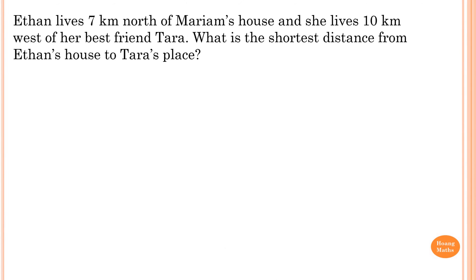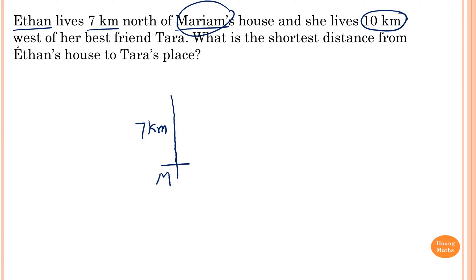Ethan lives 10 kilometers north of Maryam's house, and she lives 10 kilometers west of her best friend Tara. What is the shortest distance from Ethan's house to Tara's place? We draw a diagram: Maryam is the reference point, Ethan is 7 kilometers north, and Tara is 10 kilometers east of Maryam, with a right angle at Maryam. Note the drawing is not to scale, but 10 is a bit longer than 7.